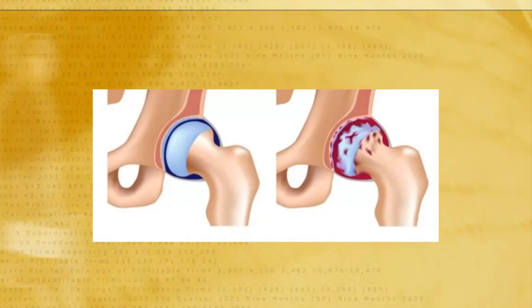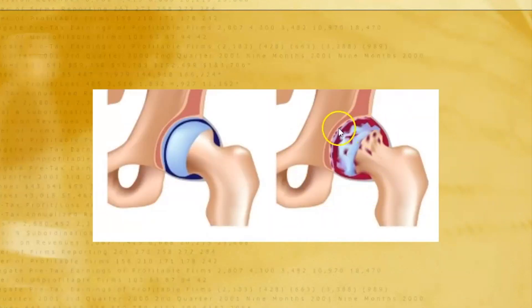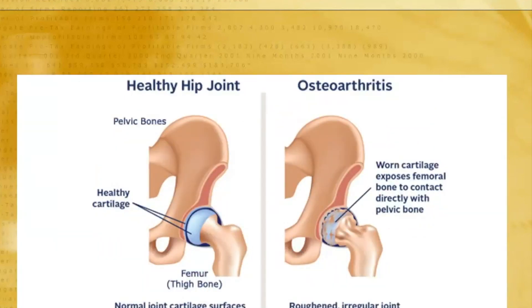Over a period of time, if this synovitis — if this joint inflammation — is not controlled, it then starts eating away the cartilage inside. Whenever there is pressure on the joint, whenever one is walking, since the cartilage is eroded, the two bones actually rub against each other, causing further pain. The initial synovitis phase is reversible — with medicines, this can resolve. The osteoarthritis phase, since the cartilage is worn out and eroded, may not be fully reversible. This is where the irreversible component comes into picture.